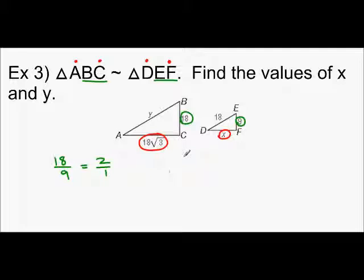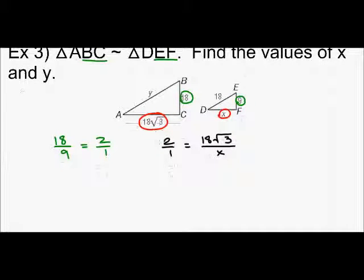Try this again. 2 over 1 equals 18 times the square root of 3 divided by X.